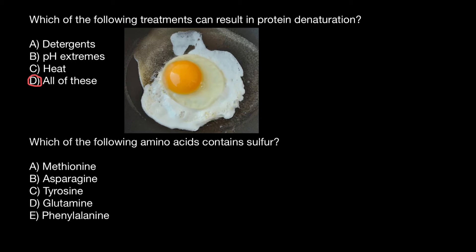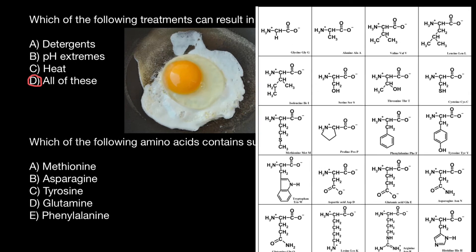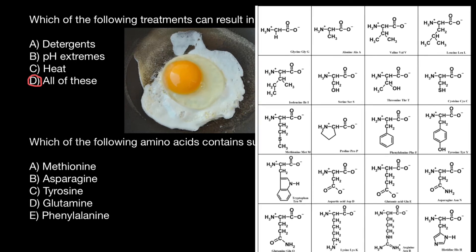Next question: which of the following amino acids contains sulfur? Take a look at this picture. Here we see 20 amino acids, and only two of them — cysteine and methionine — have sulfur. Among all the variants given, we only have methionine, which is the only correct variant here, as it contains sulfur.